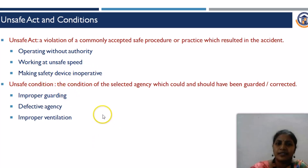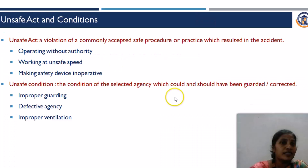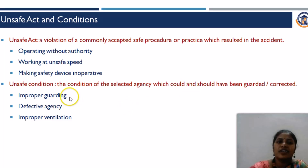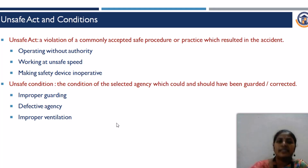What is an unsafe condition? It is the condition of the selected agency which could and should have been guarded or corrected. This refers to the environmental condition or work atmosphere where the worker or employee is working. Examples of unsafe conditions include a slippery floor, improper guarding, defective equipment, and improper ventilation — based on scenarios present in industries.